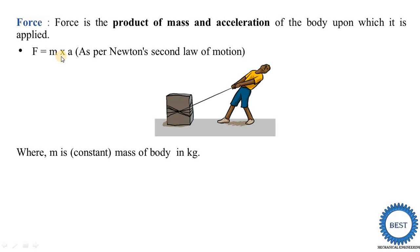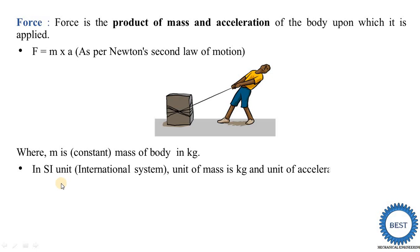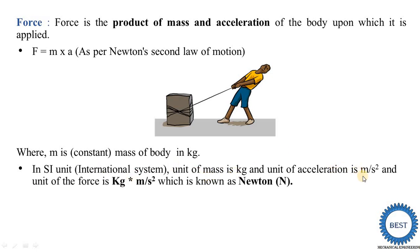That gives us velocity. Then again we differentiate meter per second, and we get the unit meter per second square. Generally we consider M as constant because the mass of the body does not change. So in SI units, the unit of mass is kg and the unit of acceleration is meter per second square. Therefore the unit of force equals kg times meter per second square, which is also known as Newton, denoted as capital N.